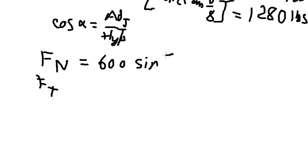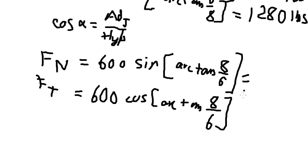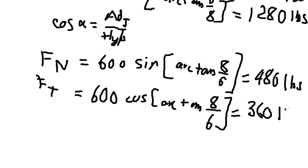We have 600 multiplied by sin(arctan(8/6)) for Fn, and 600 multiplied by cos(arctan(8/6)) for Ft. Calculating these: Fn = 480 pounds, and Ft = 360 pounds. This is the end — thank you for watching.